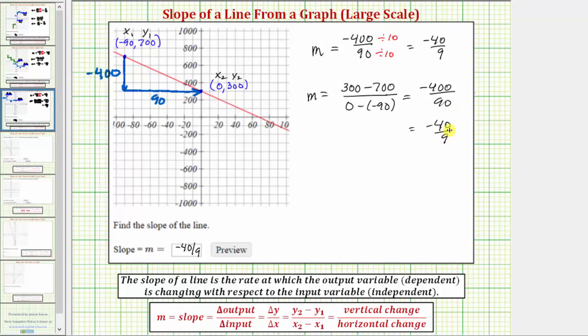This slope also tells us, if we were to select any point on the line, and then go down 40 units and right 9 units, we can determine another point on the line. I hope you found this helpful. Thank you!